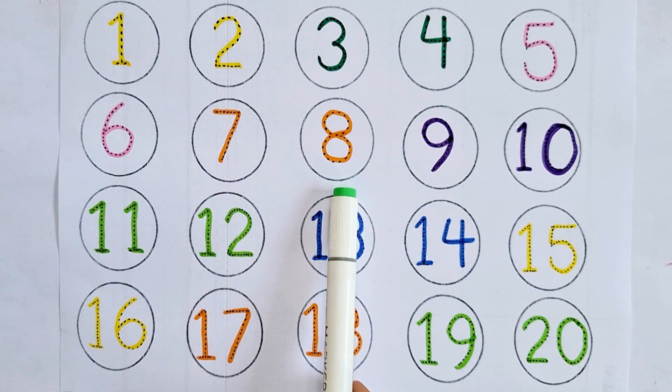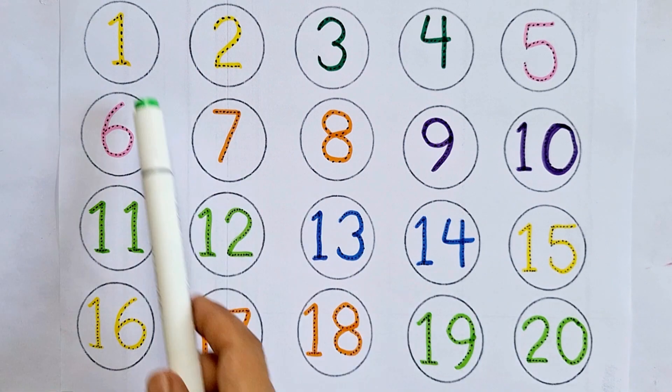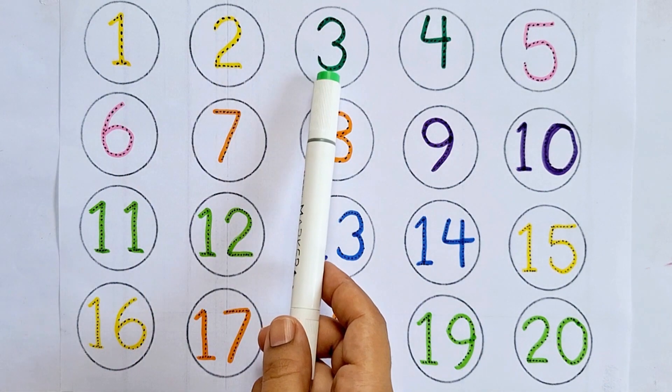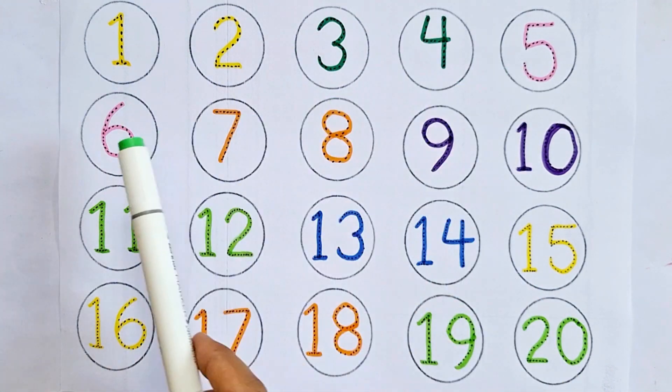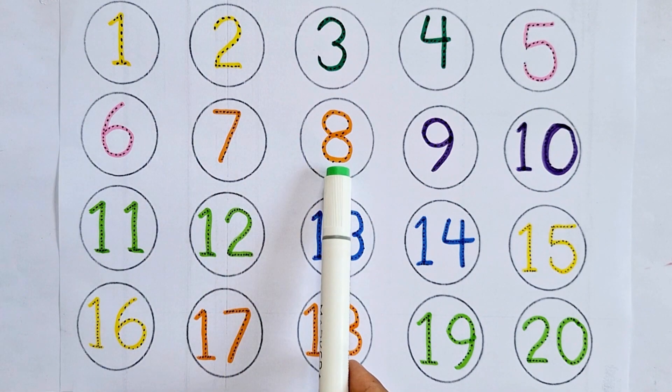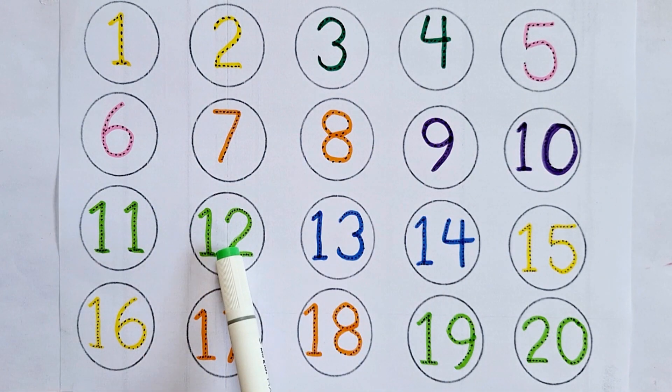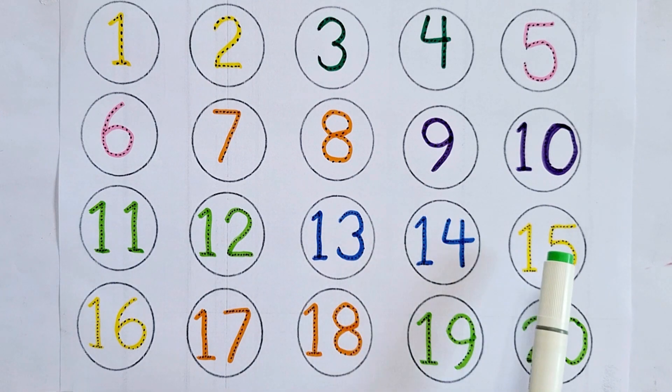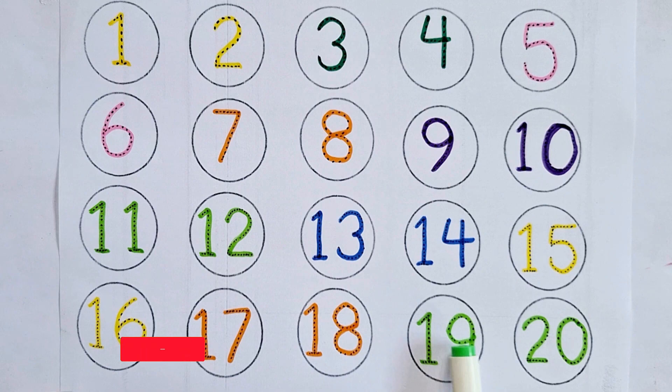Let's again learn counting from one to twenty: one, two, three, four, five, six, seven, eight, nine, ten, eleven, twelve, thirteen, fourteen, fifteen, sixteen, seventeen, eighteen, nineteen, twenty.